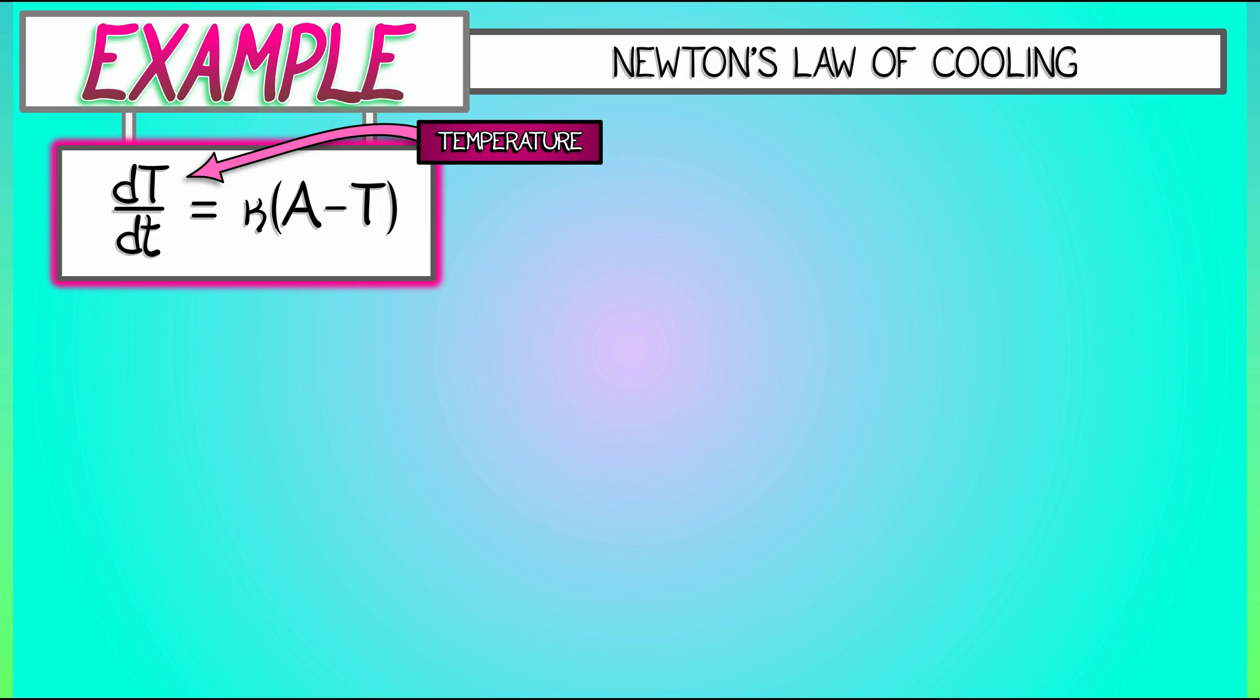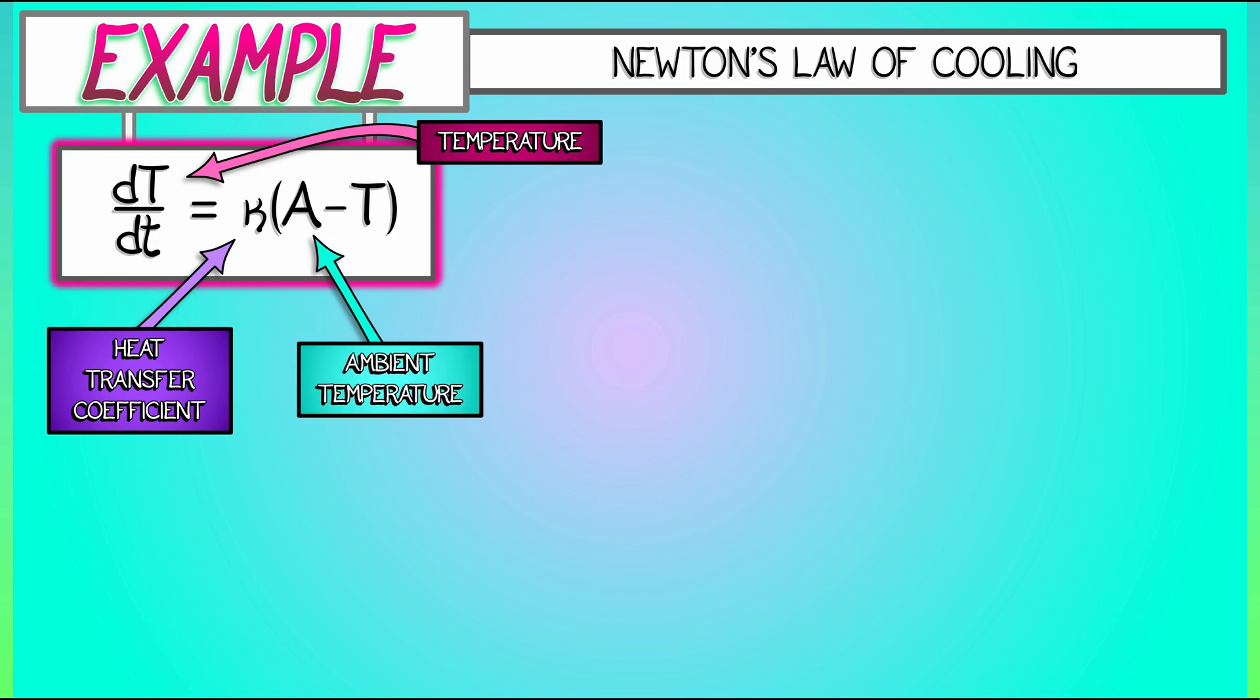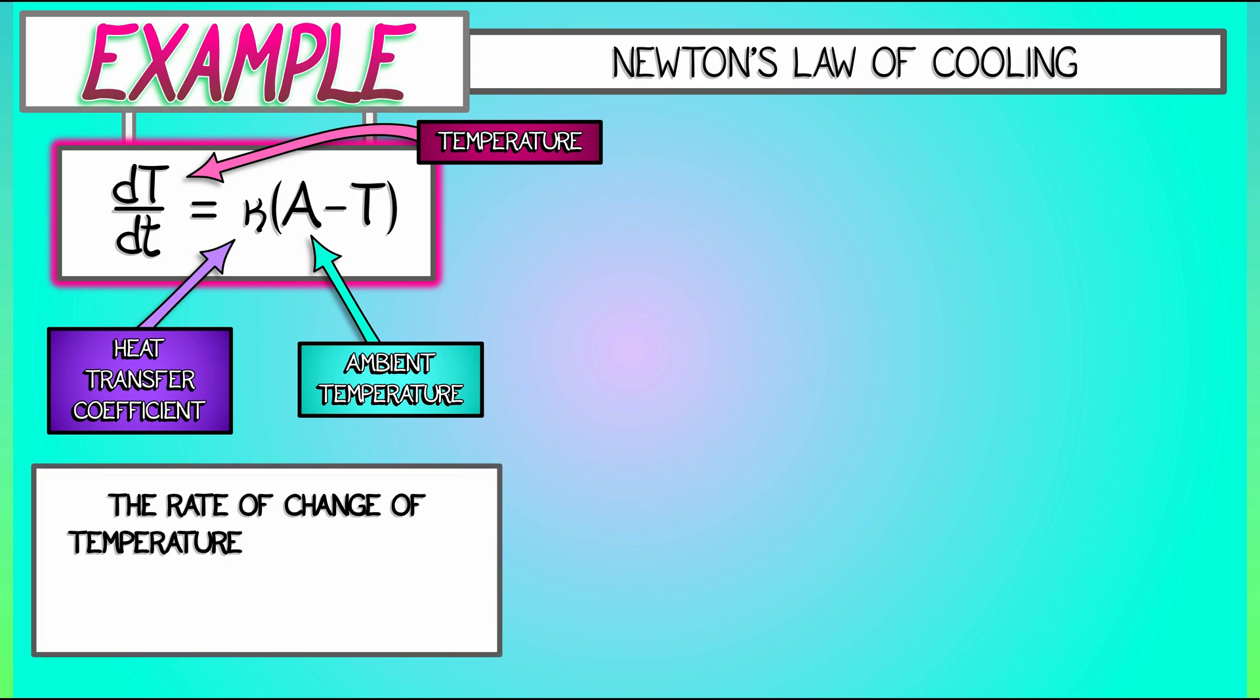Where here, kappa is a heat transfer coefficient, something about how insulating your coffee mug is. And capital A is a constant that is the ambient temperature. What's the temperature in the outside environment? Okay, that's our differential equation. It says that the rate of change of temperature is proportional to the difference between the body temperature and the ambient temperature. And this is an affine differential equation.